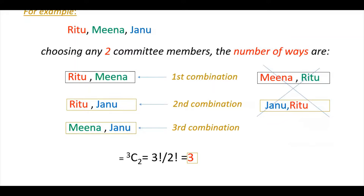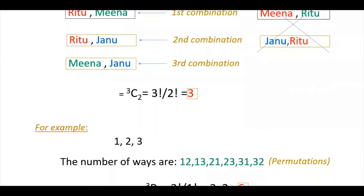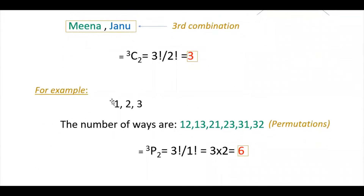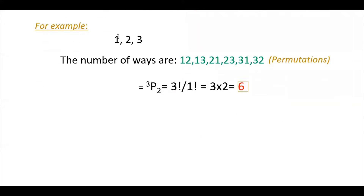That's why you have to use the combinations method here. Now, if you see this next example, you will understand why we use permutations. If you find the number of ways using digits — for example, if there are 3 digits 1, 2, 3 — and you have to write 2-digit numbers, you get: 12, 13, 21, 23, 31, 32. There is a meaning here because 12 is different from 21.